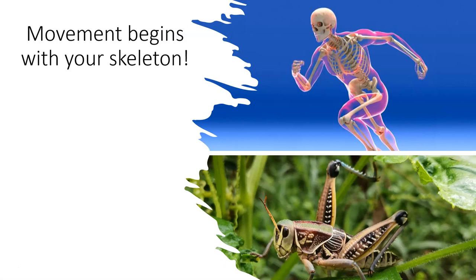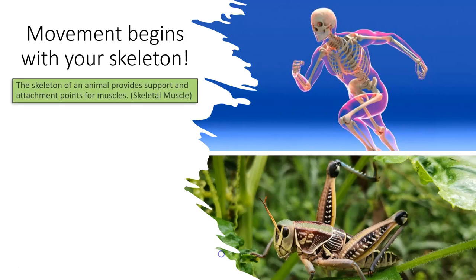When we think about movement, we obviously have to think about the skeleton, because whether you're an organism with an endoskeleton or an exoskeleton, the skeleton is kind of the foundation for which movement originates. The skeleton of an animal provides the support and the attachment points for the muscles. We call muscles skeletal muscle because they are all attached in some capacity to the skeleton. You have to attach muscles to bones in order for the muscles to actually contract and move the body.